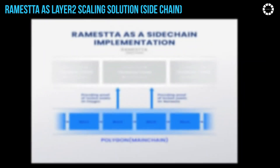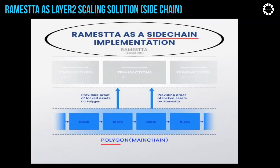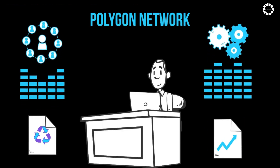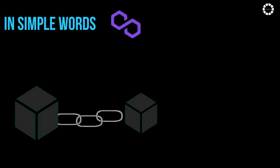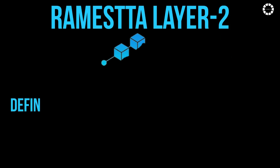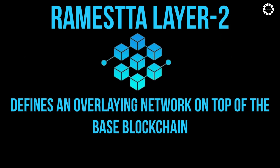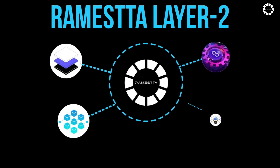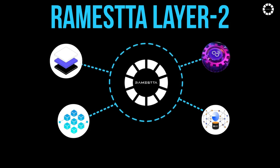Romesta as Layer 2 Scaling Solution — Sidechain: Romesta is developed as a Layer 2 Sidechain Scaling Solution of Polygon Network, meaning Romesta network protocols are layered on top of Polygon Network. Polygon Layer 1 defines the base blockchain architecture, while Romesta Layer 2 defines an overlaying network on top of the base blockchain, making it lighter and faster.